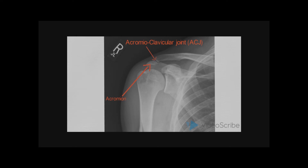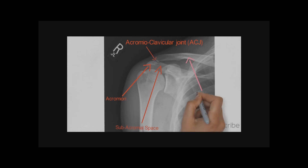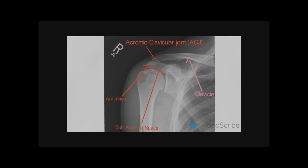We then also need to identify the acromion. When identifying the acromion, we may as well also look at the acromioclavicular joint. We need to assess the body of the acromion, the joint space in the acromioclavicular joint, and the relationship of the acromioclavicular joint to the coracoid process.